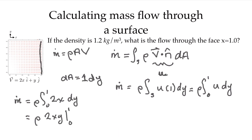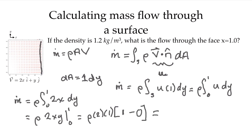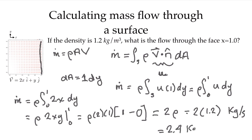On this surface, x is a constant value of 1, so substituting x equals 1 gives rho times 2 times 1 times (y evaluated from 0 to 1), which equals 2 rho. That equals 2 times 1.2. Following the units through, this gives us units of kilograms per second — so 2 times 1.2 is 2.4 kilograms per second. That's the mass flow going through that surface.